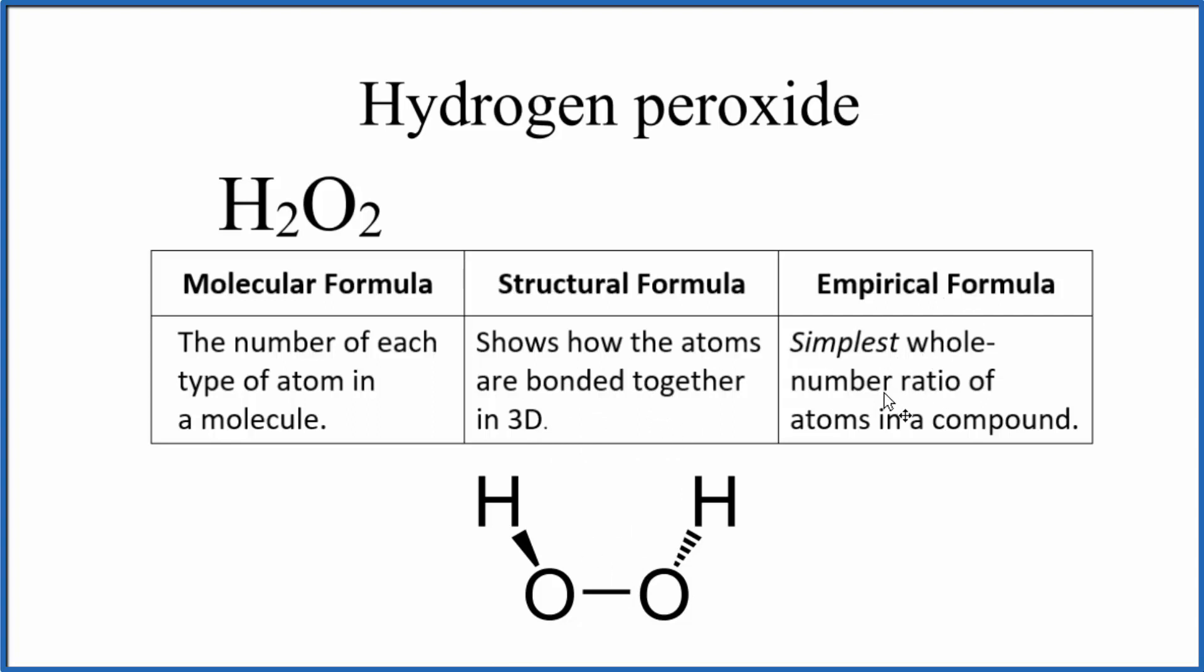The empirical formula, that's the simplest whole number ratio of the atoms. So if we look at H2O2, our molecular formula, we have a 2 to 2 ratio. We could reduce that to a 1 to 1 ratio. That would look like this. So now if we divided each of these by 2, that would give us H1O1. We don't write the ones by convention there. So the empirical formula for hydrogen peroxide would just be HO.